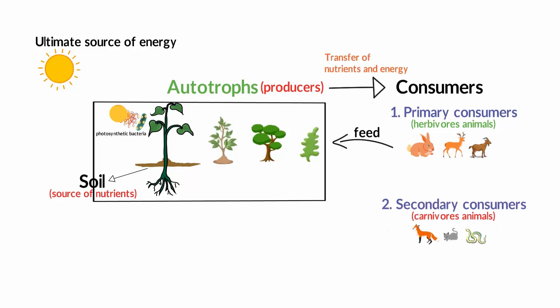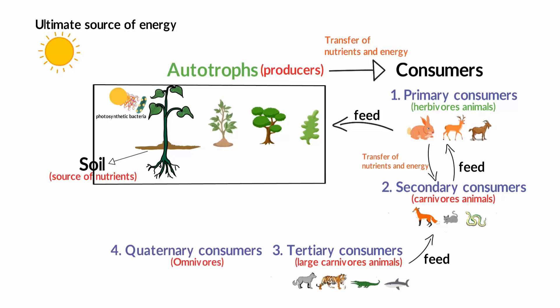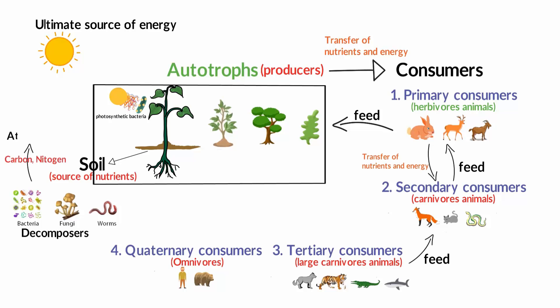And then in the final step, when plants and animals die, bacteria and fungi feed on the decays of dead plants and animals. This process is called decomposition, and again the byproduct is carbon which returns to the atmosphere. This entire cycle is called the carbon cycle.